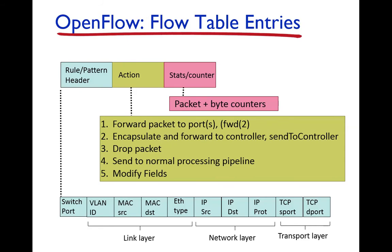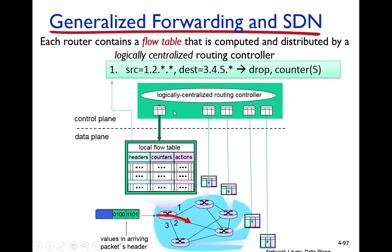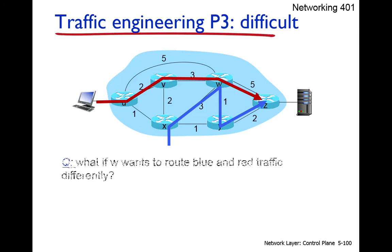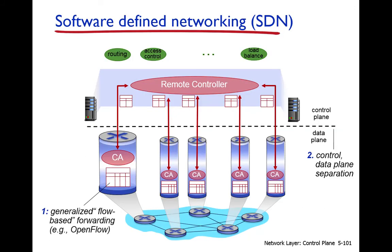In SDN, generalized forwarding means that the forwarding table contains a flow table with a header. This header can consist of port number, switch number, VLAN ID, MAC source, MAC destination, Ethernet type, IP source, IP destination, IP protocol, TCP source port, and TCP destination port. This is the first advantage of SDN — it uses generalized flow-based forwarding.